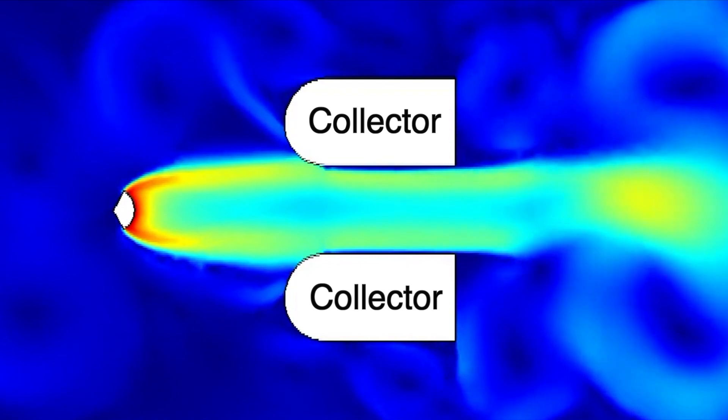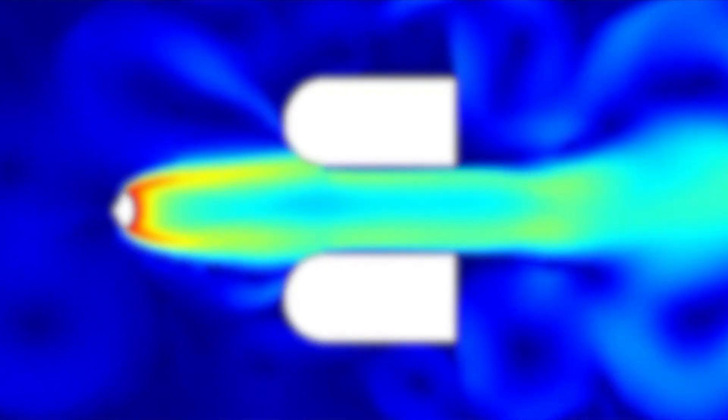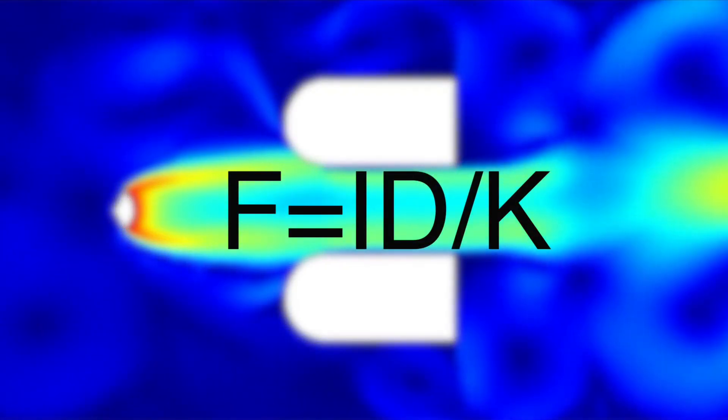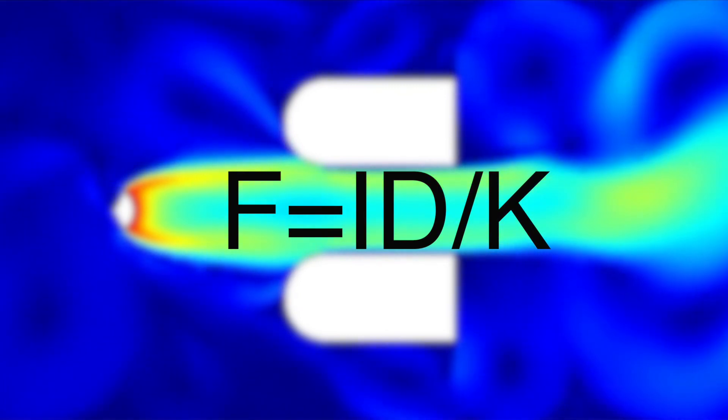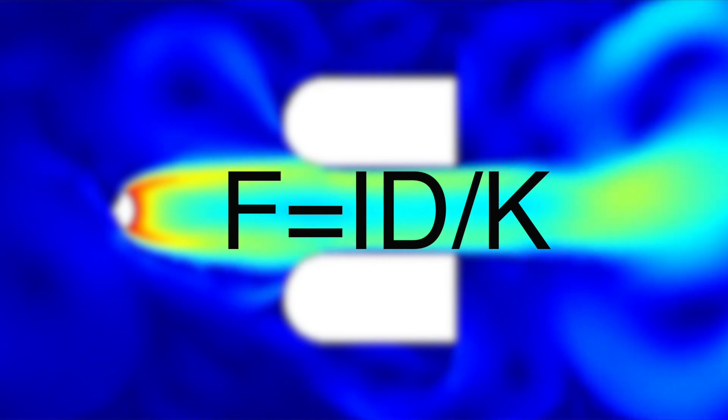The thrust generated can be approximated by the equation F equals ID over K, where I is the current of ions in the air, D is the air gap between the electrodes, and K is the ion mobility coefficient, or the ability for the ions to move through the air.